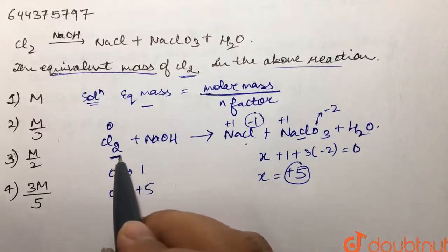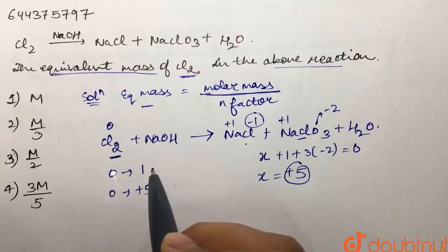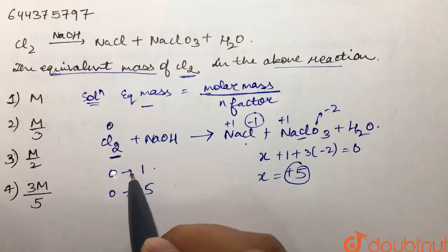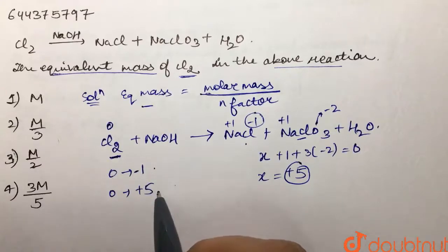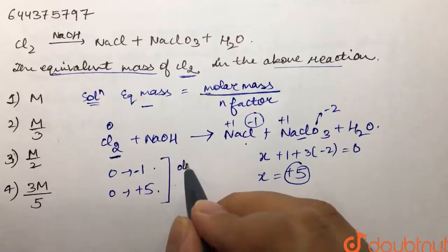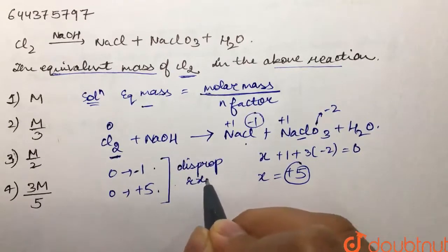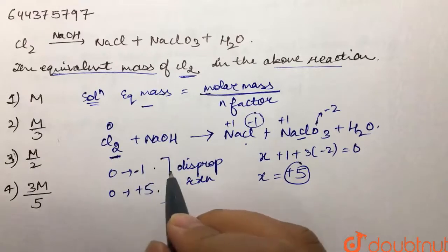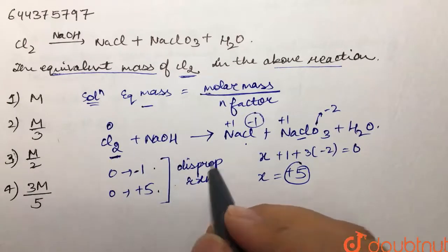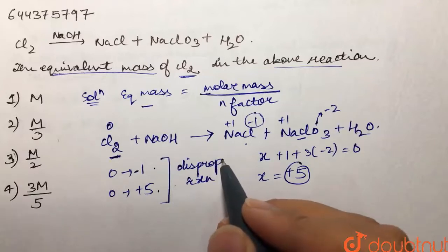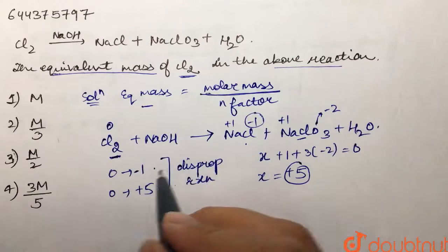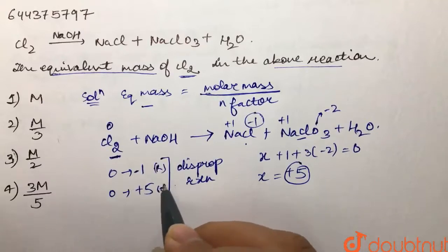The same species is undergoing both reduction and oxidation, which means this is a disproportionation reaction. Oxidation is loss of electrons and reduction is gain of electrons. Here, going to -1 is reduction (gaining electrons), and going to +5 is oxidation (losing electrons).